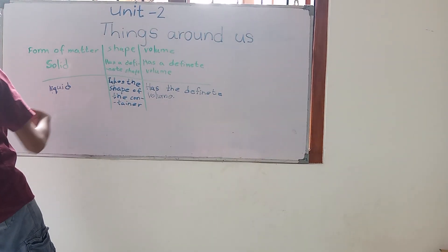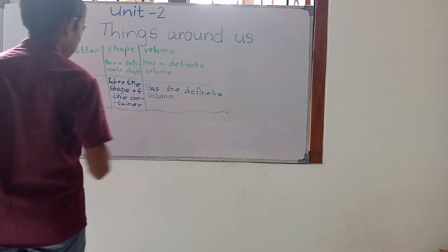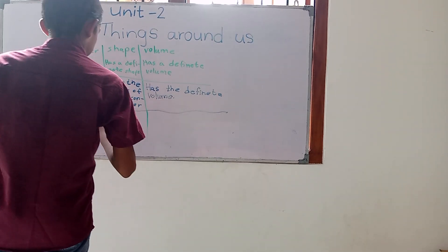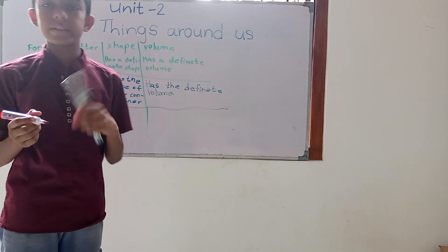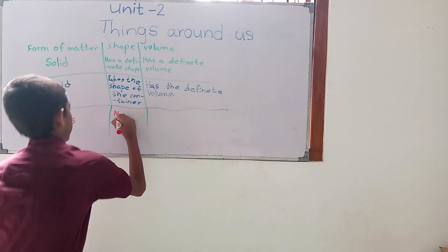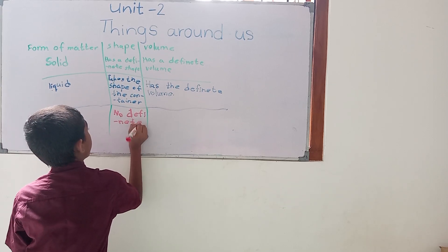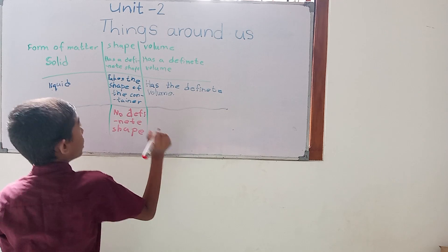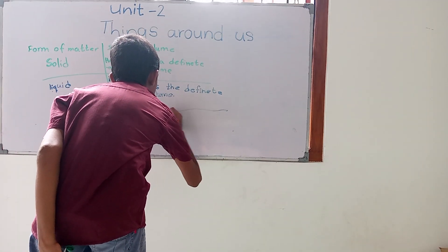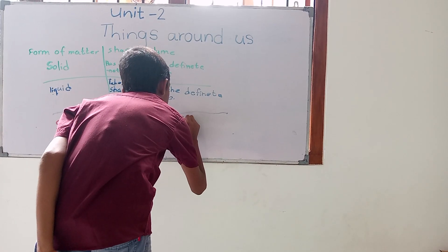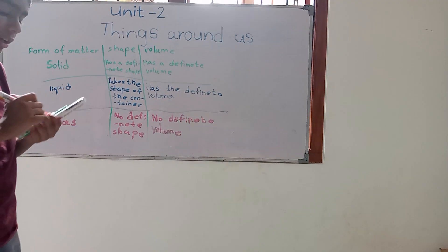Now we move on to the last one of this table, which is gas. Does gas have a definite shape? No. So we can write: no definite shape. And as for volume — no definite volume. And that is the end of the table.